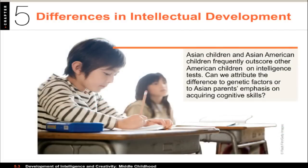In terms of differences in intellectual development, Asian and Asian American students often do better on standardized tests. Part of this may be that in many Asian cultures, academic success is attributed to hard work rather than innate giftedness, which facilitates persistence. IQ scores do differ between socioeconomic groups and ethnic groups, but the existence of these differences does not explain why they are there — that's a whole other issue.